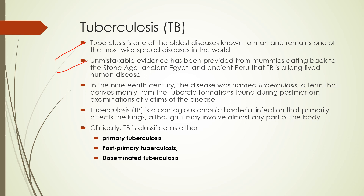TB is a chronic bacterial infection — remember, it is a bacterial infection — that primarily affects the lungs, although it can go to almost any part of the body including the kidneys and the meninges of the brain. We'll see pictures of tubercles in other organs besides the lungs. TB is classified as either primary, post-primary, or disseminated — these are not synonyms.